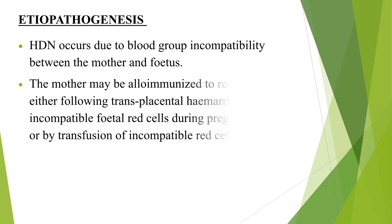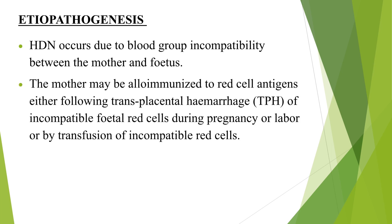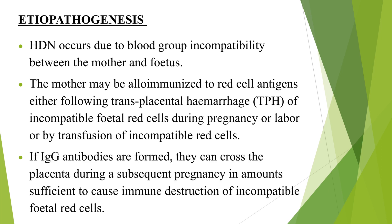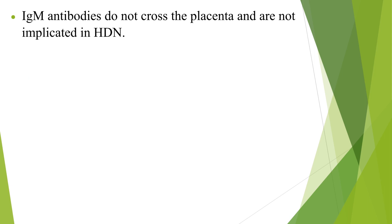The mother may be immunized to red cell antigens either following transplacental hemorrhage of incompatible fetal red cells during pregnancy or labor, or by transfusion of incompatible red cells. If IgG antibodies are formed, they can cross the placenta during a subsequent pregnancy in amounts sufficient to cause immune destruction of incompatible fetal red cells. IgM antibodies do not cross the placenta and are not implicated in HDN.